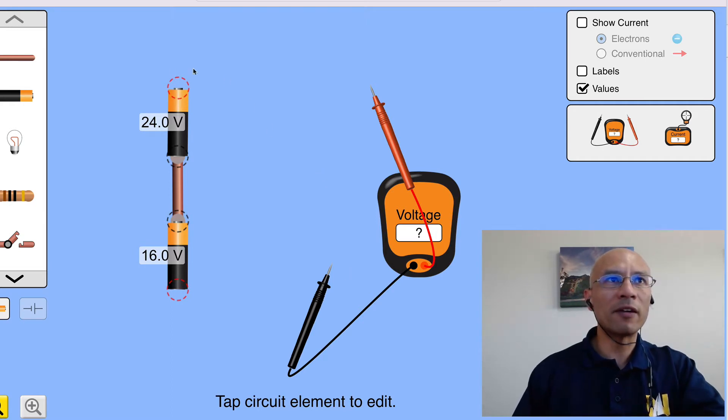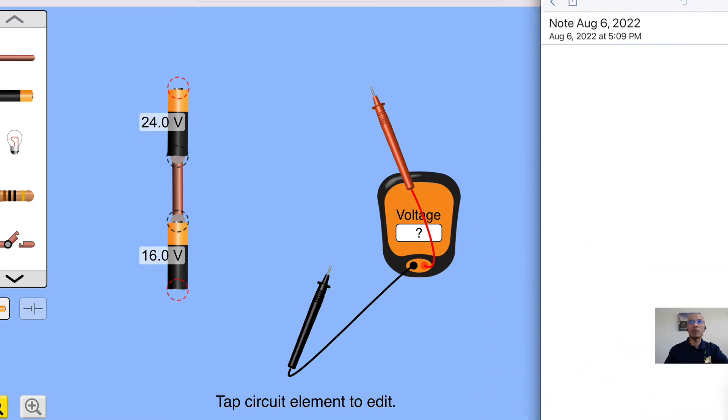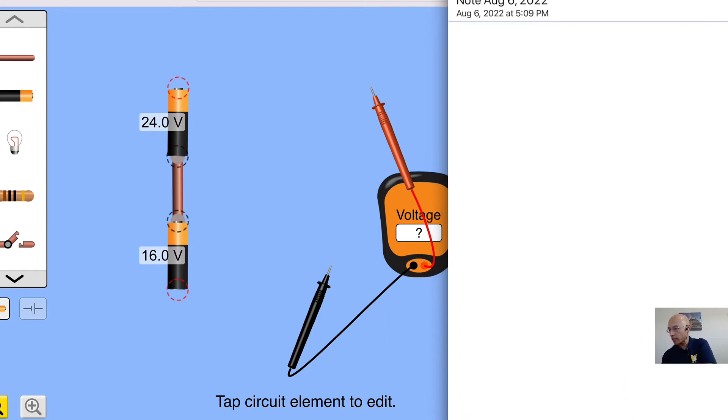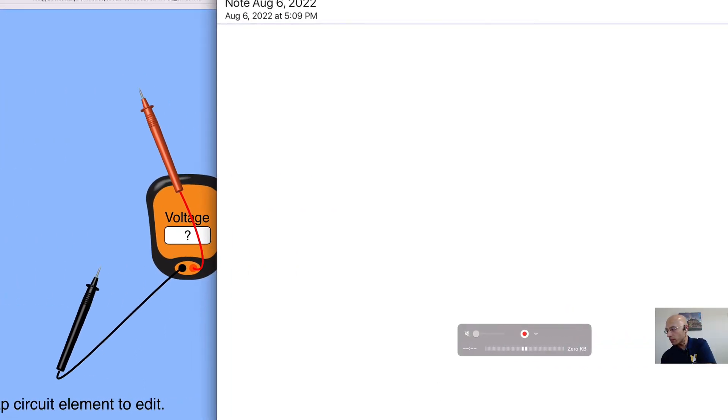Here I've placed two batteries and I've connected them. So there's a 24 volt battery and a 16 volt battery. Let's sketch a circuit schematic and think about this a little bit more. So here I'll sketch two voltage sources, and we can identify three nodes. Let's label them A, B, and C.